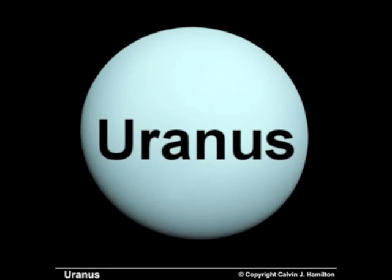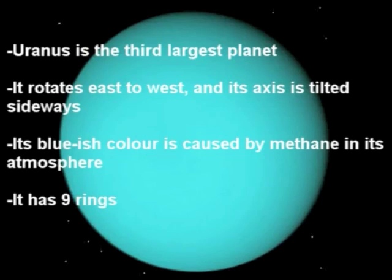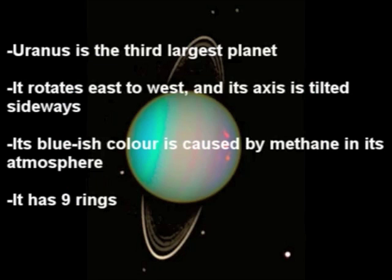Uranus is after Saturn, and it is the third largest planet. It is unique because its axis of rotation is tilted towards the plane of its orbit. It also rotates east to west, unlike the other planets. The methane in its atmosphere gives it a blueish color. Uranus is also similar to the other gaseous planets in composition, and it has nine rings around it.